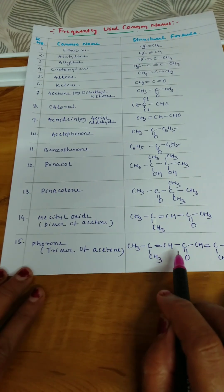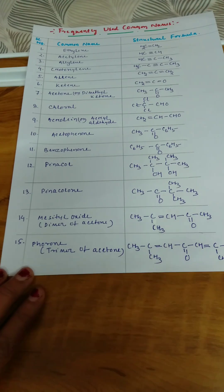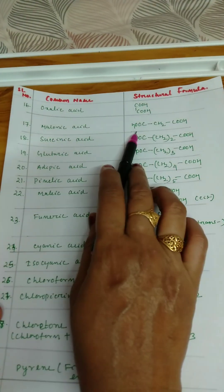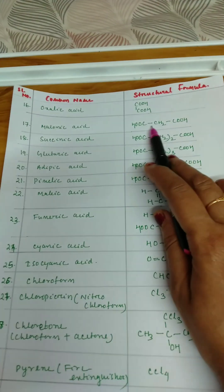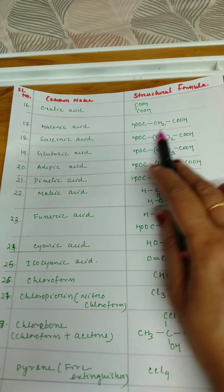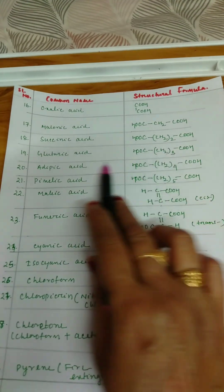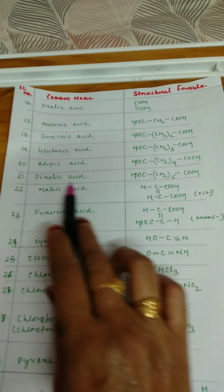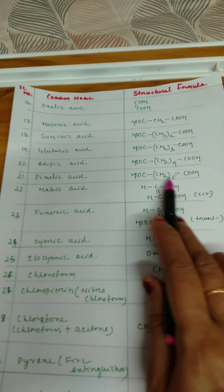Similarly oxalic acid, malonic acid. In malonic acid, three members where one methylene group is there. In succinic acid two methylene groups are there. In glutaric acid three methylene groups. In adipic acid four methylene groups. In pimelic acid five methylene groups are there.